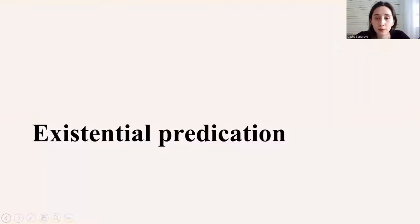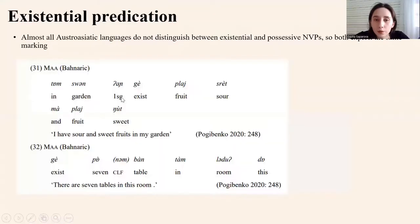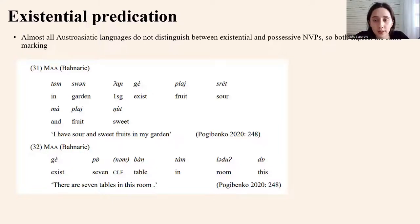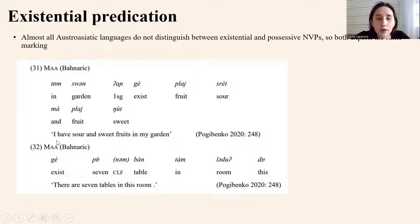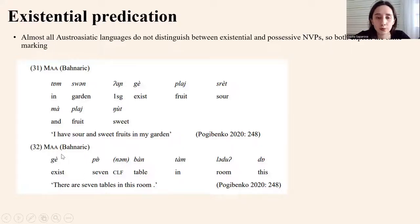Now, existential predication. Almost all Austroasiatic languages do not distinguish between existential and possessive nonverbal predications — they both exploit the same marking. As an example from Ma language: 'I have sour and sweet fruits in my garden' is possessive predication using copula 'gear', and 'there are seven tables in my room' — copula 'gear' is also used in existential predication.